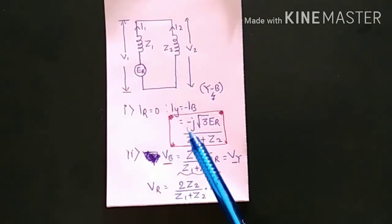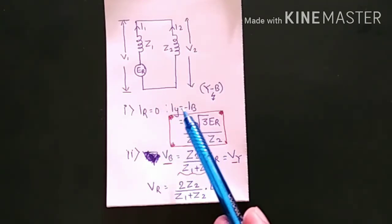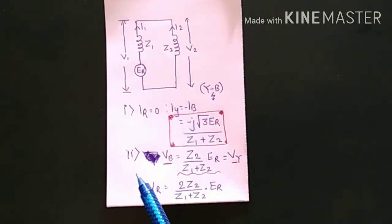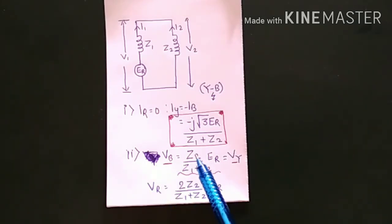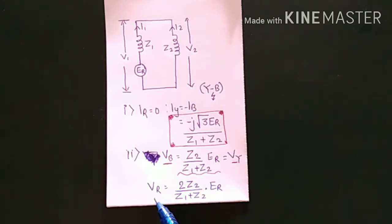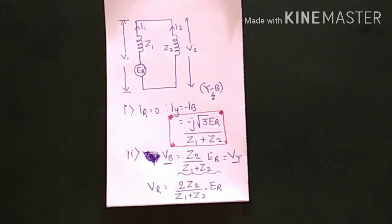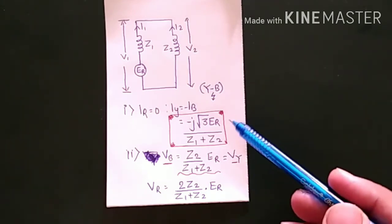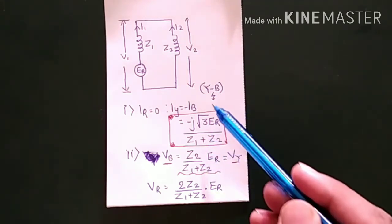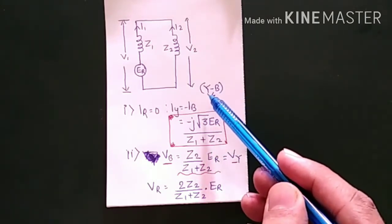IY = −IB. For phase voltage: VB = VY = ER · Z2 / (Z1 + Z2), and VR = (2Z2 / (Z1 + Z2)) · ER. This is the formula to find out the line to line fault current and the phase voltages, where the fault is occurring on Y and B phase.